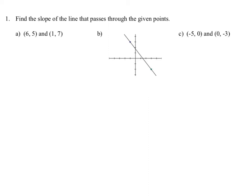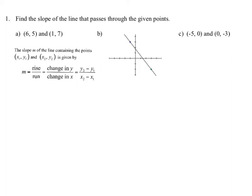We want to find the slope of the line that passes through the given points using the slope formula. Recall that the slope m of the line containing points (x₁, y₁) and (x₂, y₂) is given by m equals rise over run, which equals the change in y over the change in x, which equals y₂ minus y₁ divided by x₂ minus x₁. Note that x₁ and x₂ cannot be equal, or you would end up dividing by zero.